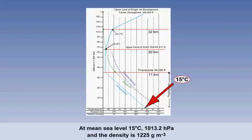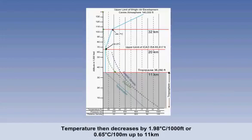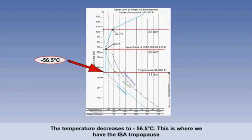ISA assumes that at mean sea level, the temperature is 15 degrees Celsius, pressure is 1013.2 hectopascals, and density is 1,225 grams per cubic metre. From the surface up to 36,090 feet, or 11 kilometres, the temperature decreases at a constant rate of 1.98 degrees Celsius per 1,000 feet, or 0.65 degrees Celsius per 100 metres, down to minus 56.5 degrees Celsius. This is where we find the tropopause in ISA, and the temperature no longer decreases with altitude.